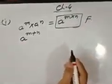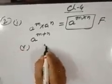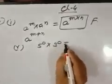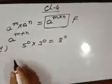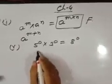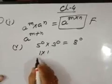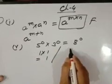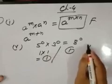Point number 5: 5 to the power 0 multiplied by 3 to the power 0 equals 8 to the power 0. Any number to the power 0 equals 1. So 5 to the power 0 is 1, and 3 to the power 0 is also 1, giving 1 times 1 equals 1. On the right-hand side, 8 to the power 0 is also 1. Left-hand side equals right-hand side, so it is true.